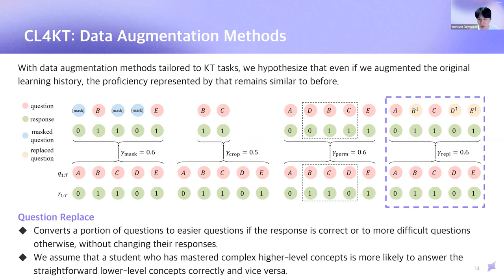The fourth one, question replace. This converts some questions to easier question if the response is correct or to more difficult question otherwise without changing their responses. We assume that a student who has mastered complex higher-level concepts is more likely to answer the simple lower-level concepts correctly and vice versa. For example, a student who has mastered the concept of trigonometric functions can easily solve addition and subtraction questions and vice versa. What I want to highlight is that this kind of custom augmentation doesn't significantly change the student proficiency.